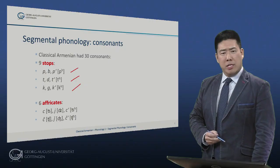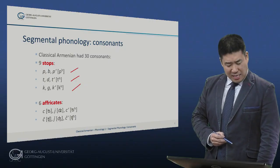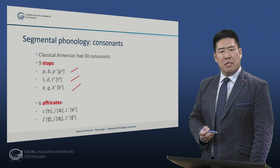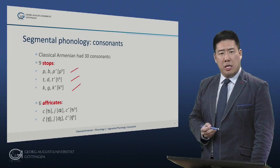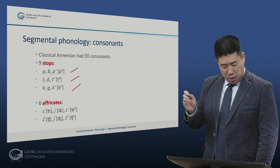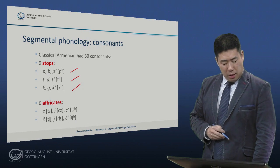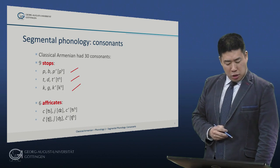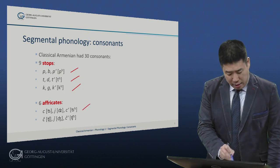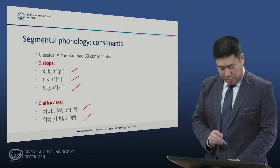There were six affricates, the sounds transcribed respectively C, J, and C with the little mark of aspiration, transcribed the same way except with the little haček on top.